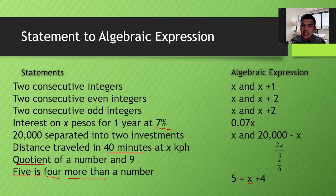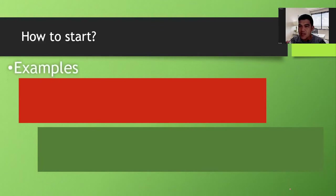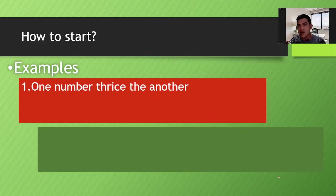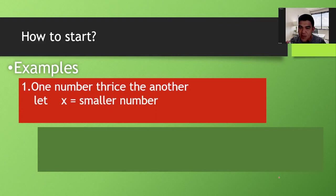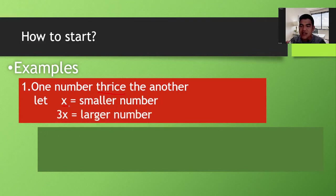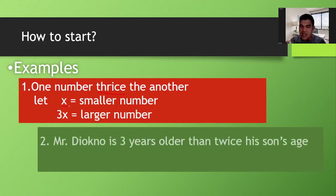Now let's look at how to start solving word problems. Example one: 'One number is thrice another.' This means there are two numbers. Let the smaller number be x, and since the second number is thrice the other, the larger number is 3x.